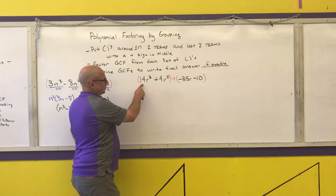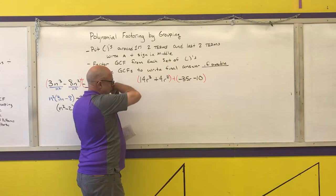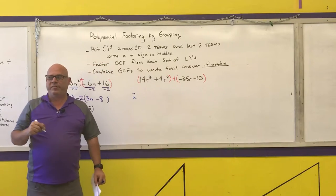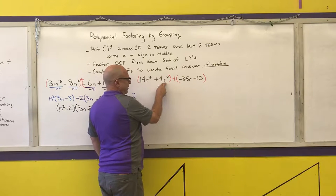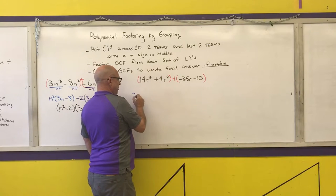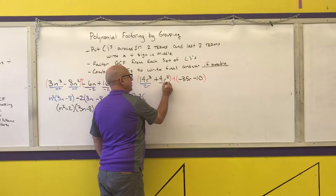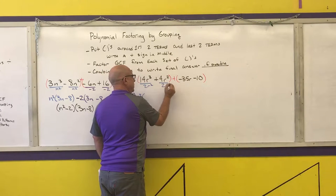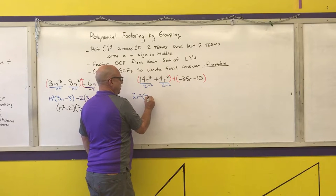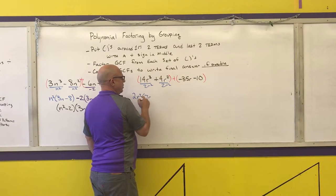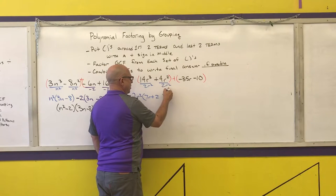The biggest number that goes into 14 and 4 is 2. Write down the lowest power of each variable that appears in every term — r appears in every term and its lowest power is r squared. After division: 14 divided by 2 is 7, r cubed divided by r squared is r, 4 divided by 2 is 2, and r squared over r squared is 1.